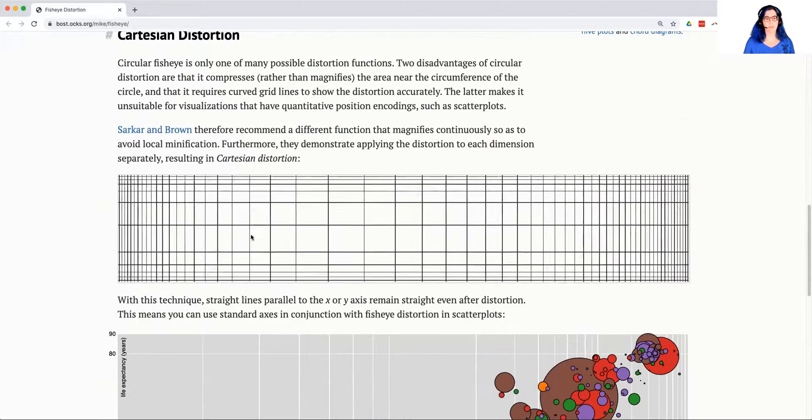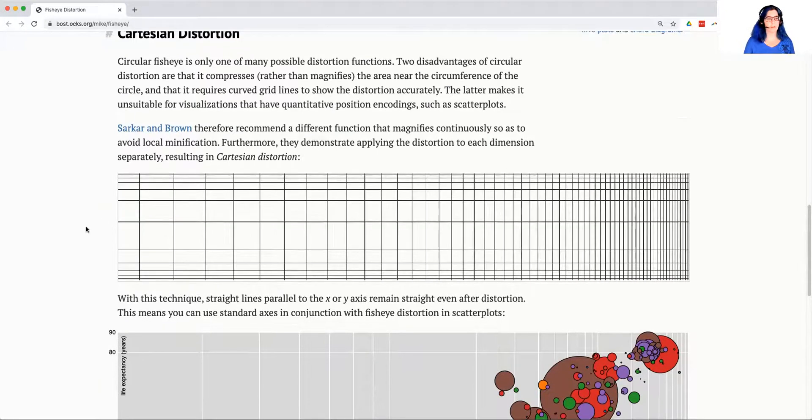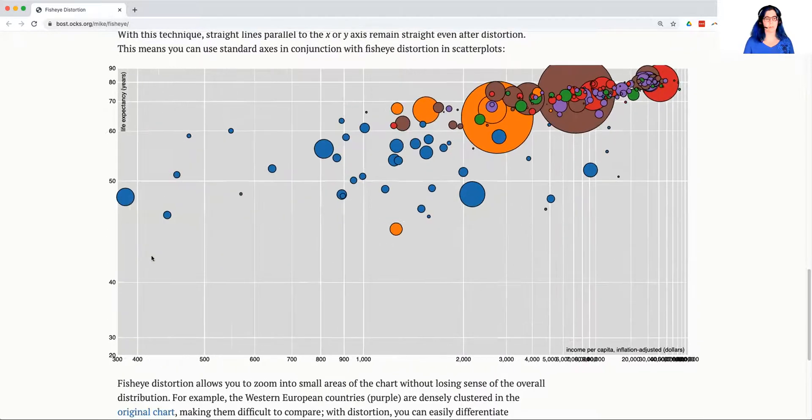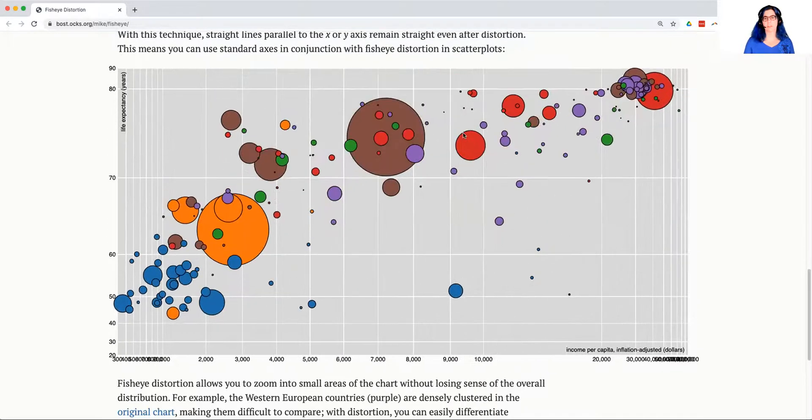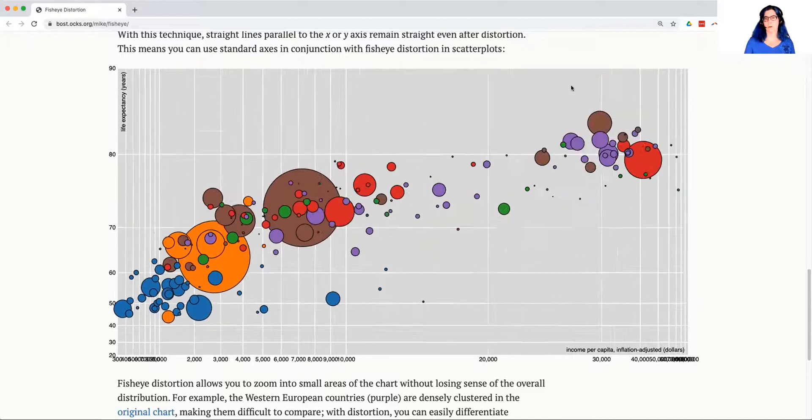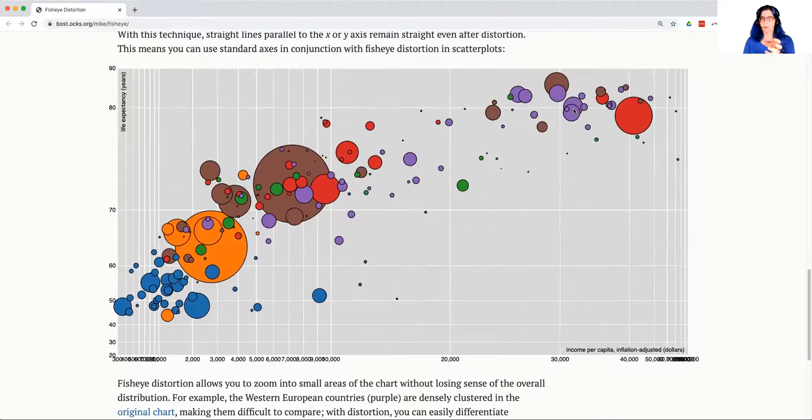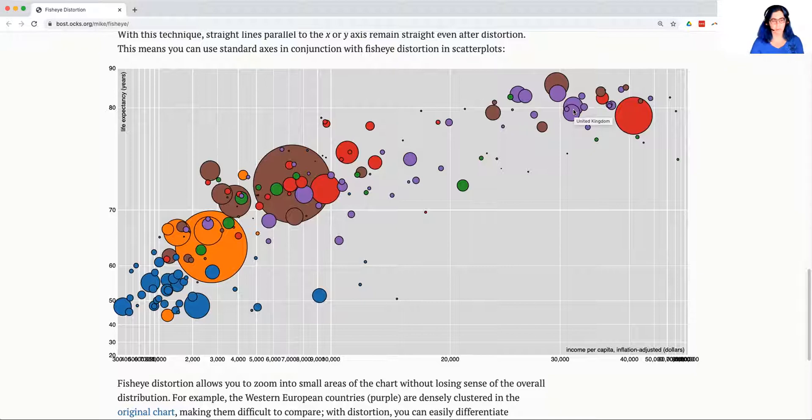Instead of doing something curvilinear, we could do something rectilinear. Here's an example of a scatterplot where just by moving the mouse, we're changing which parts are magnified. Notice how what's near the mouse, our focus, is magnified, but we aren't just zooming in. We're retaining some information around the edges on either side of that local distortion.